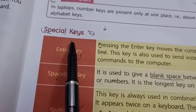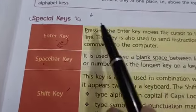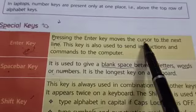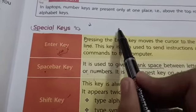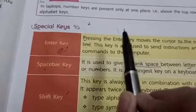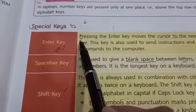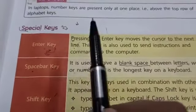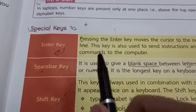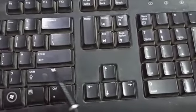Now let's learn some special keys which are commonly used. The first special key is the Enter key. With the help of the Enter key, the cursor is moved to the next line. The cursor is the small blinking line that shows where you can start typing the text. If you want to move to the next line, you can do so with the help of the Enter key. There are two Enter keys placed on the keyboard.